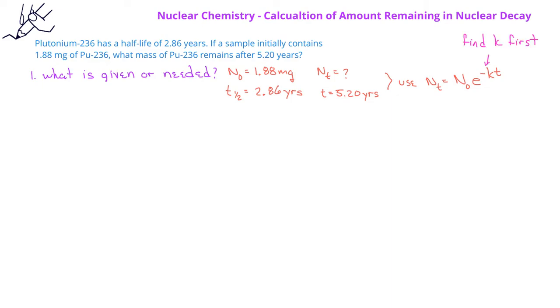In order to find the rate constant, we can use the relationship between the half-life and the rate constant. When we rearrange it to isolate the rate constant, we get k equals 0.693 divided by the half-life, which is 2.86 years. This gives us the rate constant of 0.242 reciprocal years.